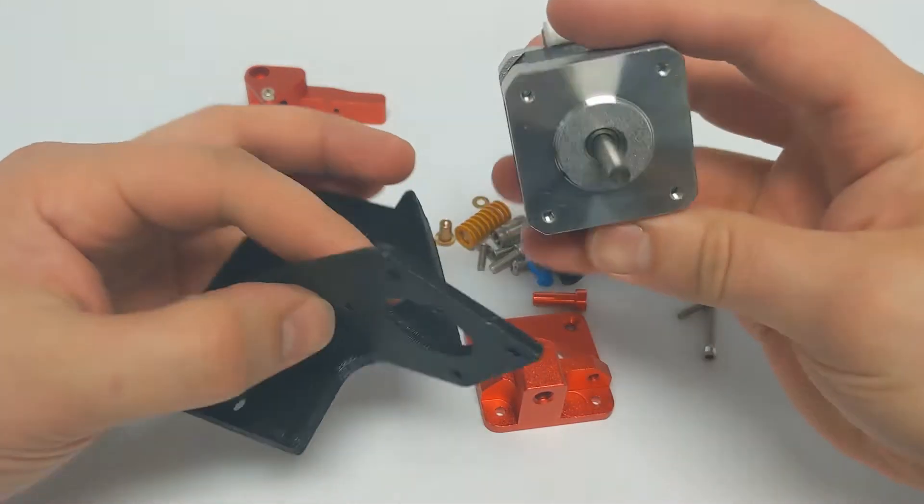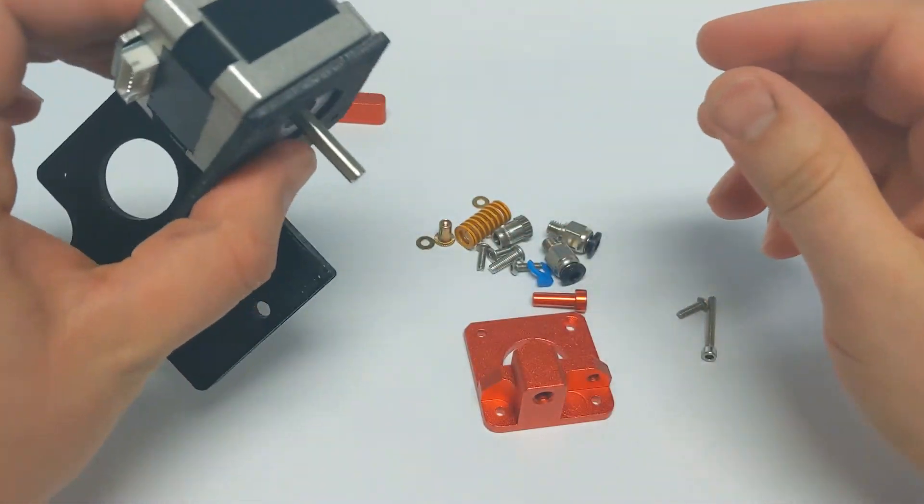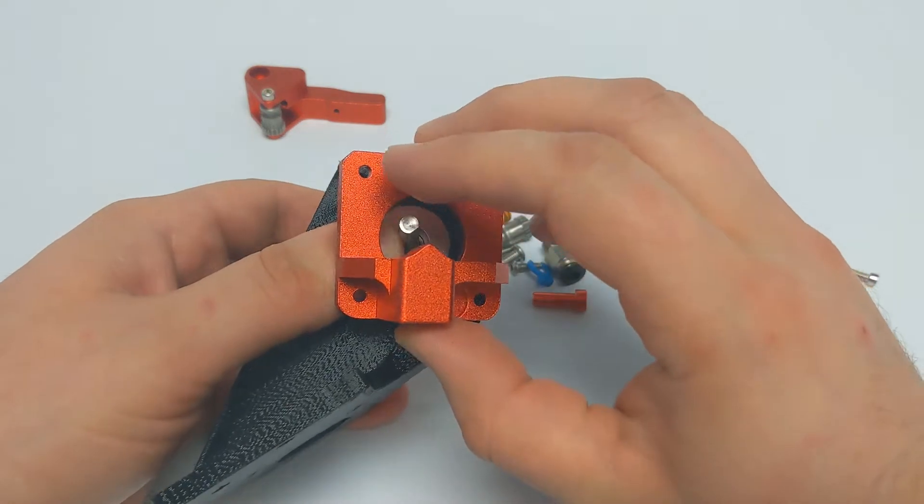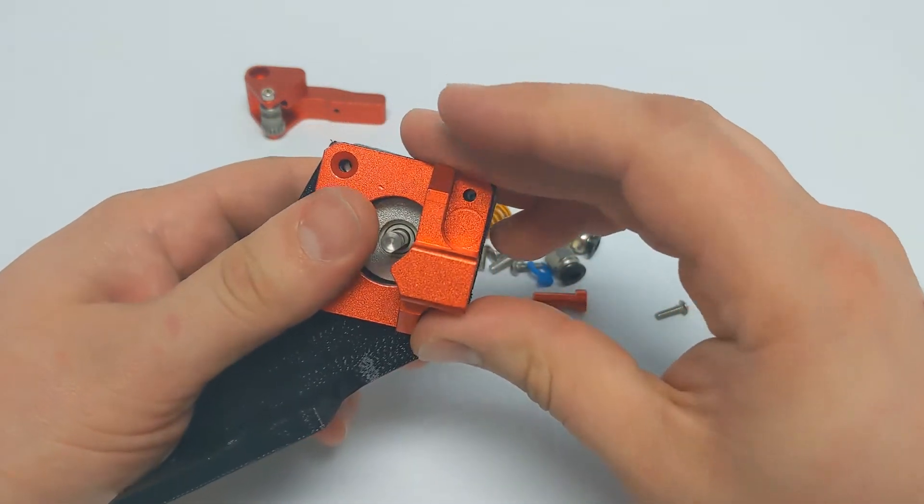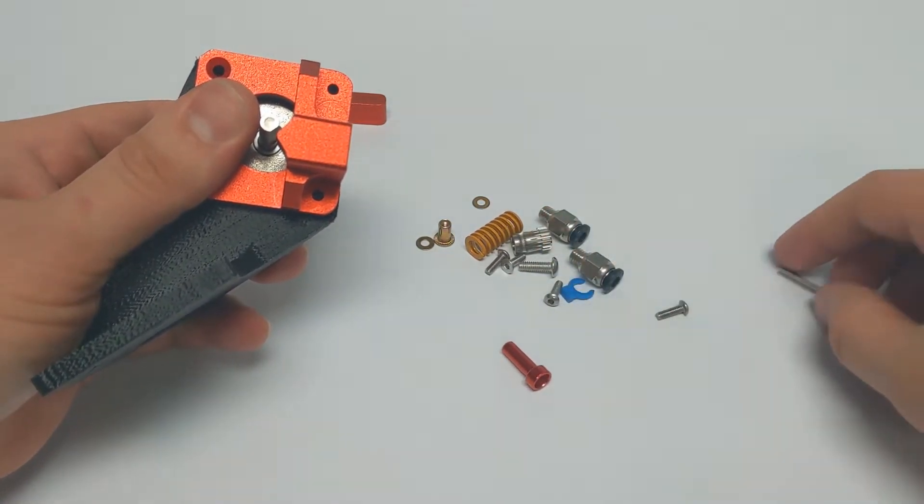Let's grab the stepper motor and 3D printed mount first. Find the anodized aluminum base plate and the M3 screw that has the countersink on it. This screw matches up with the hole in the base plate so that the extruder arm can move past it smoothly.